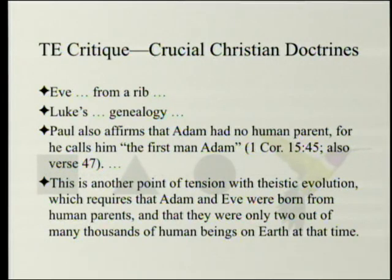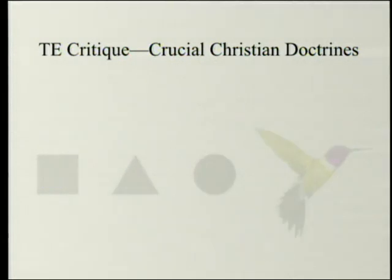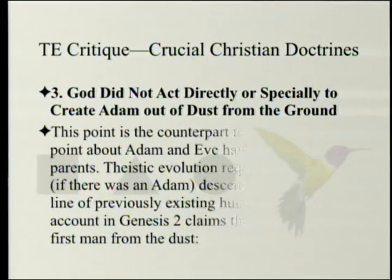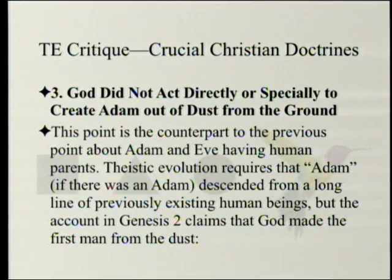Point two: Adam and Eve were born from human parents. This is the second point of tension between theistic evolution and Genesis 1–3.